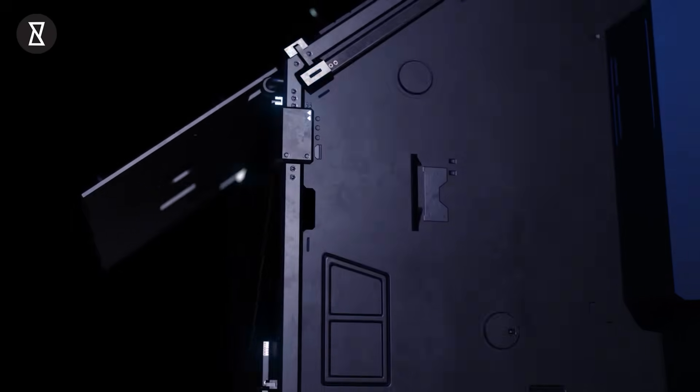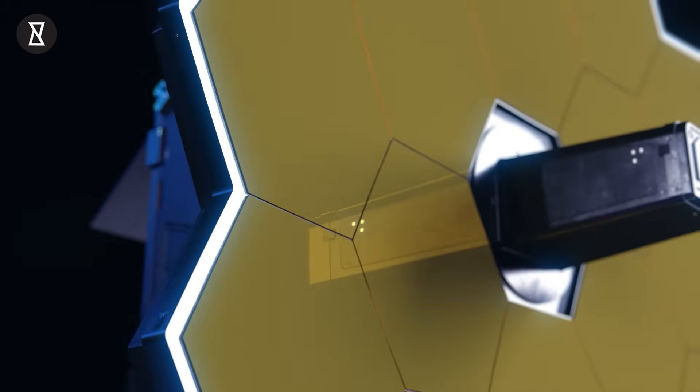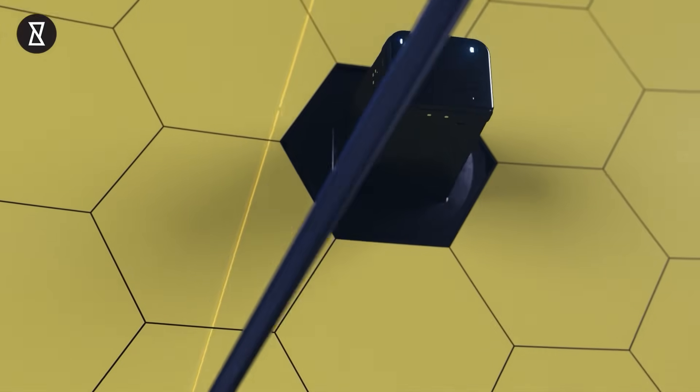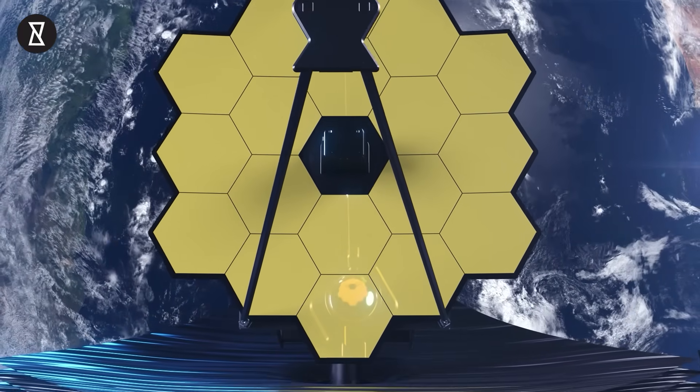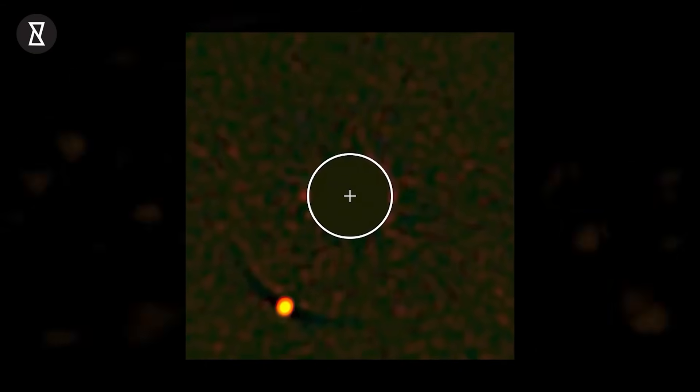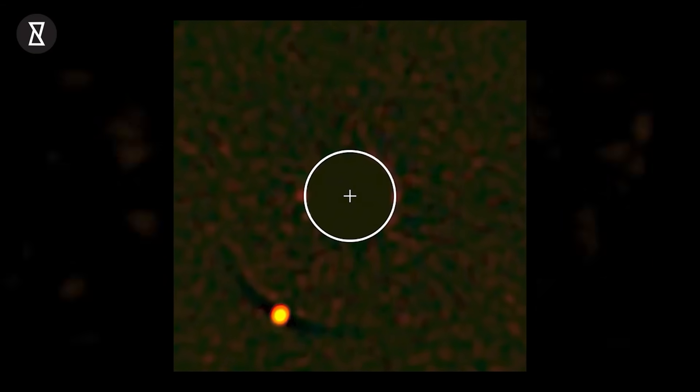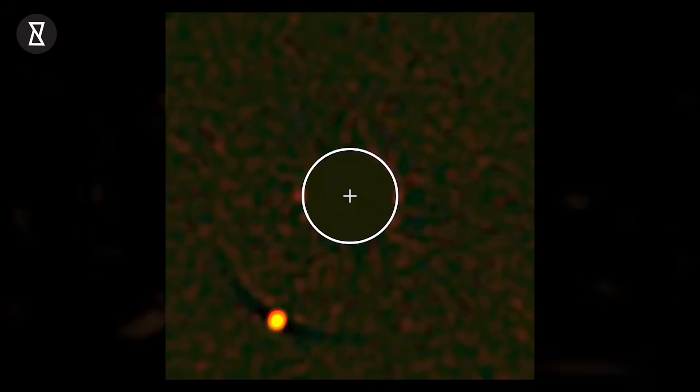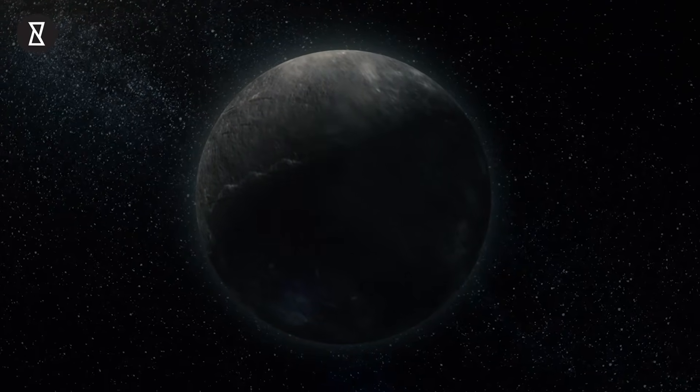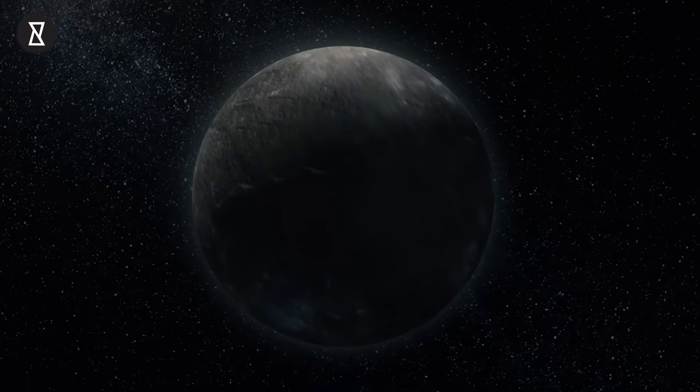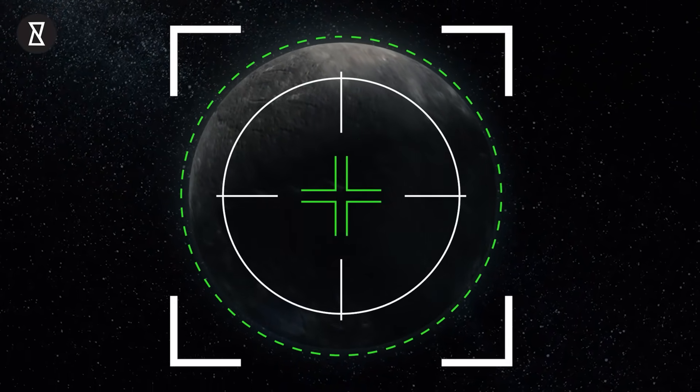To gather JWST's first direct images of an exoplanet, astronomers turned the telescope towards the star HIP 65426, whose massive planetary companion HIP 65426b was discovered using direct imaging back in 2017. The planet is unusual in several ways,